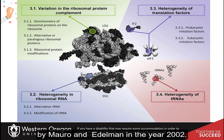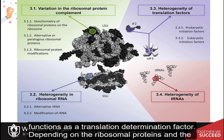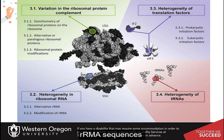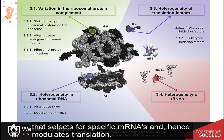In the year 2002, the authors proposed that the ribosome composition functions as a translation determination factor. Depending on the ribosomal proteins and the ribosomal RNA sequences represented in the respective ribosome, the complex acts like a filter that selects for specific messenger RNAs and hence modulates translation.